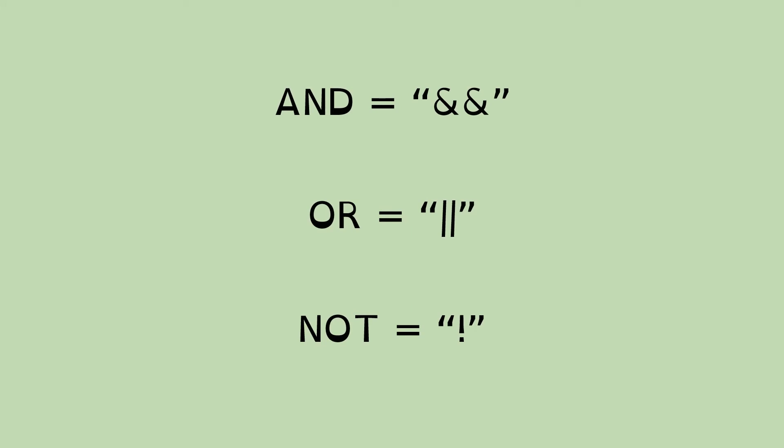So as a quick recap, we've got the and operation, we're going to use a double ampersand. Or we're going to use a double upright bar. And not, we're going to use an exclamation mark.